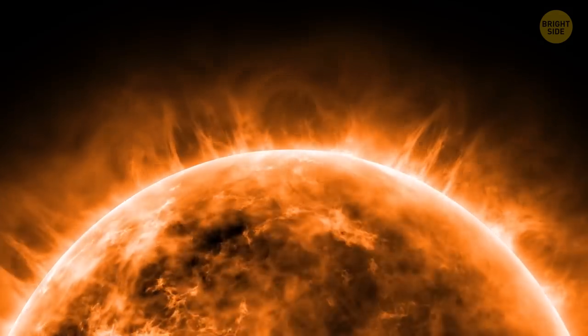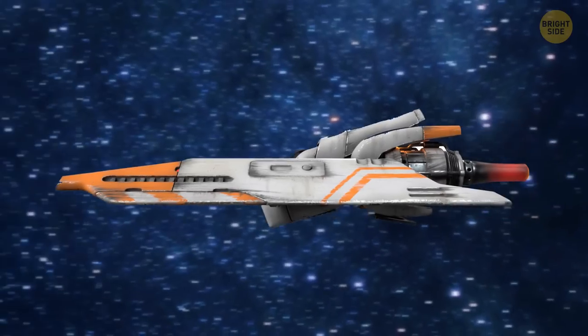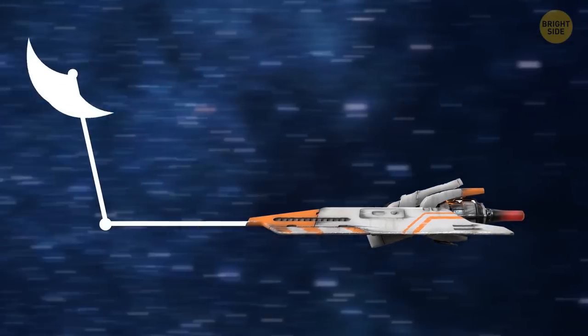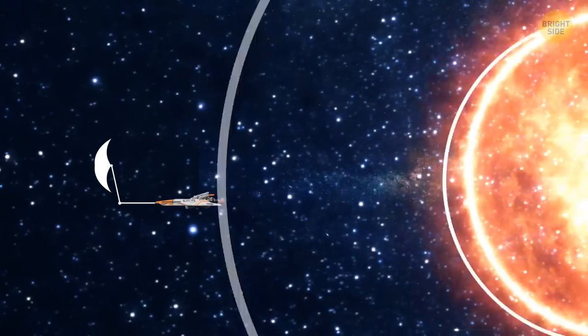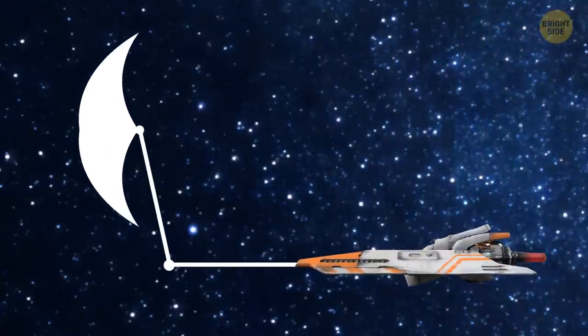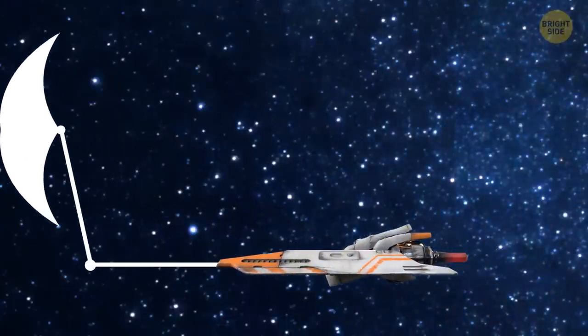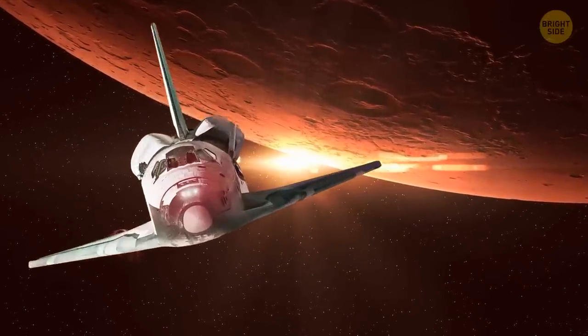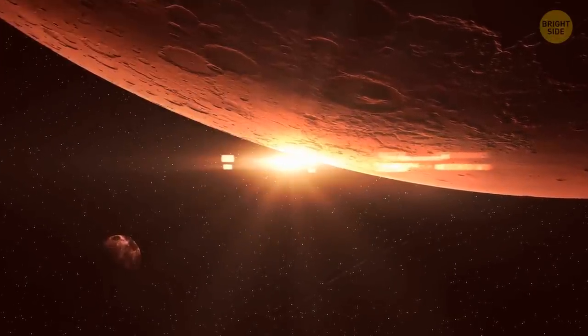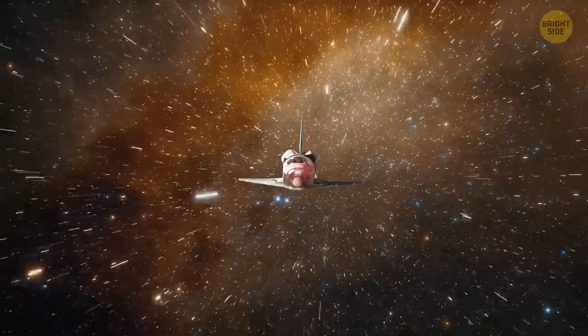If we create a sail the size of a soccer field and unfold it in space, it'll start catching the Sun's rays. And since the surface of the sail is reflective, the rays will bounce off the sail. This will create thrust and propel the spacecraft. One disadvantage of this technology is that we can only use it inside the solar system. In cold interstellar space, the sail won't be able to catch the Sun's rays or solar wind.